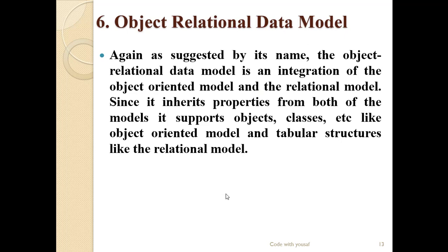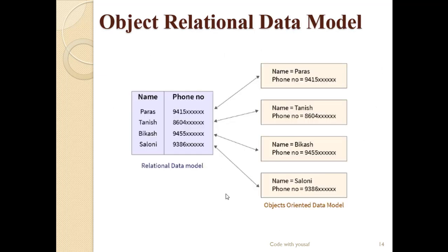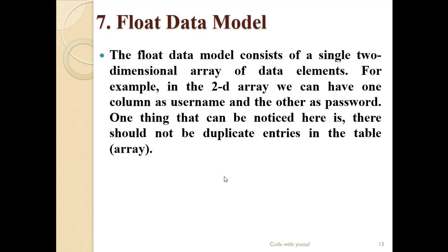The sixth one is the object-relational data model. As the name suggests, the object-relational data model is an integration of the object-oriented model and the relational model. It inherits properties from both models. In this diagram we can see it inherits data from both the relational data model tables and the object-oriented data model.